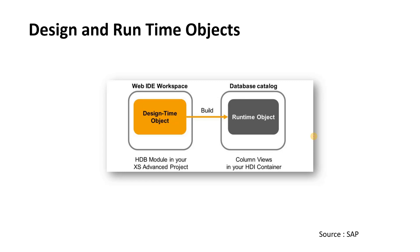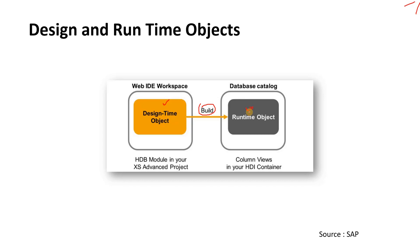Now we have the concept of design time and runtime objects. Design time objects are things like a CDS view or a calculation view — you code them and save them in a file. Earlier we used to activate; now we build. Once you build, it becomes a runtime object, meaning a physical object is created in your database. Design time objects are what you create with code or a graphical tool; once you build them, they become runtime objects in your backend HDI container.